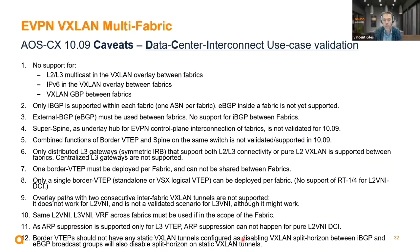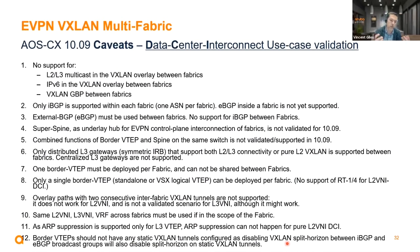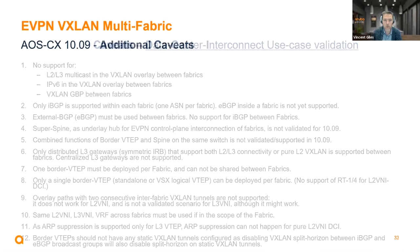For the border VTEP, there is currently no support for having both a static VXLAN tunnel and a dynamic VXLAN tunnel. If you disable the split horizon rule for dynamically constructed VXLAN tunnels between the IBGP and eBGP broadcast groups, you will also disable split horizon for the static VXLAN tunnel, which may create a loop. This is out of scope for the solution right now.